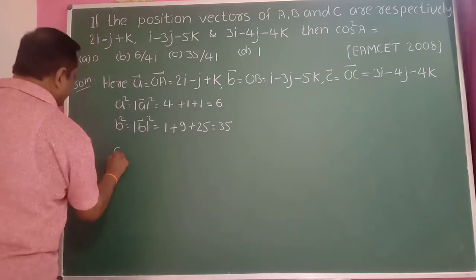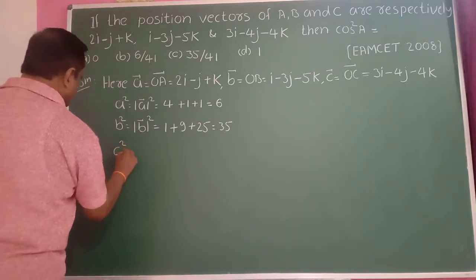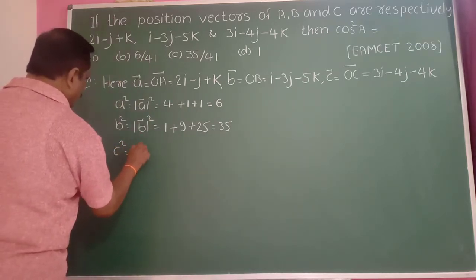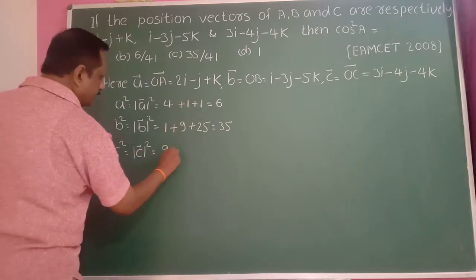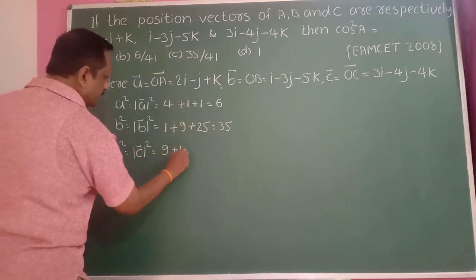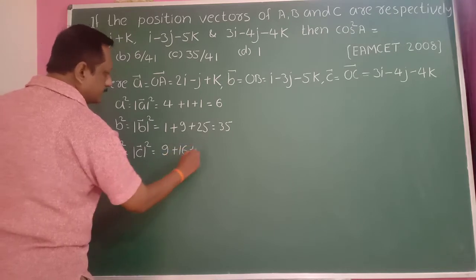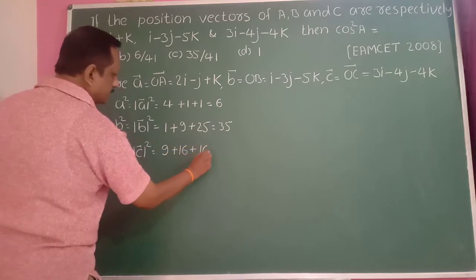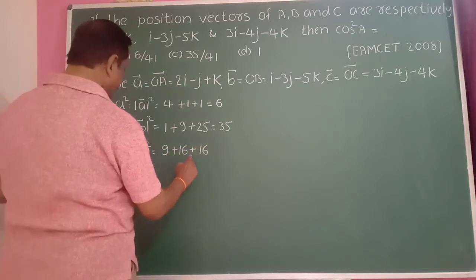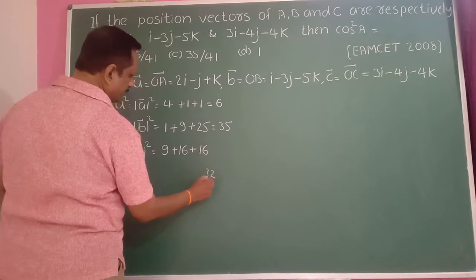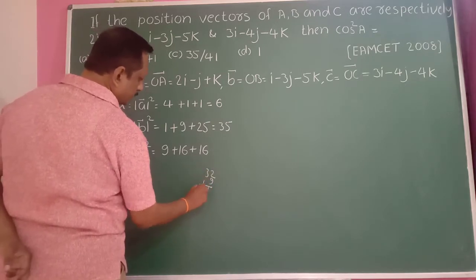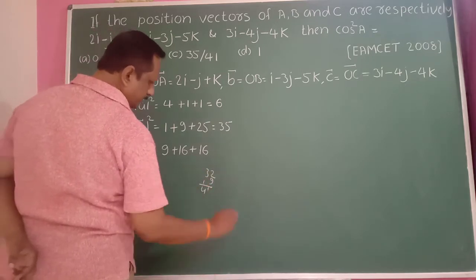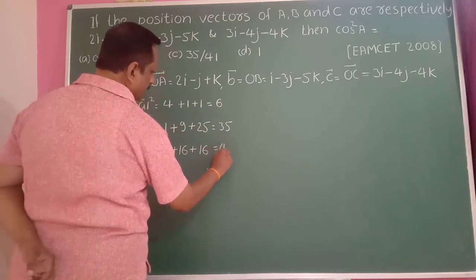And C squared is equal to modulus of C̄ squared. 3 squared is 9, minus 4 squared is 16, and minus 4 squared is 16. 16 plus 16 is 32, plus 9 is 41. So C squared equals 41.